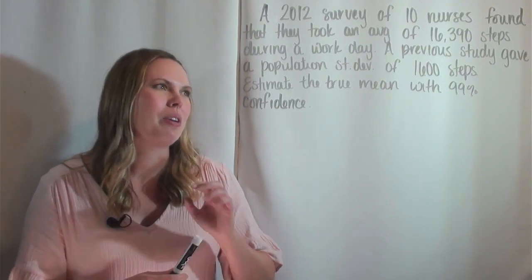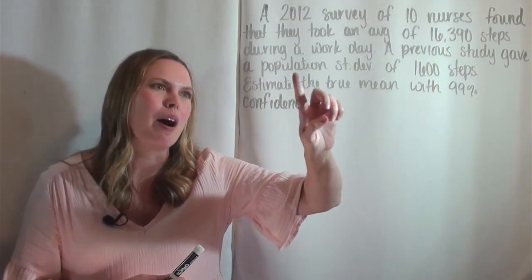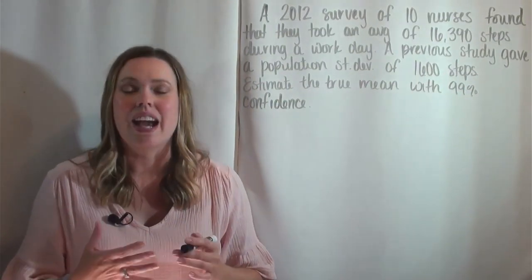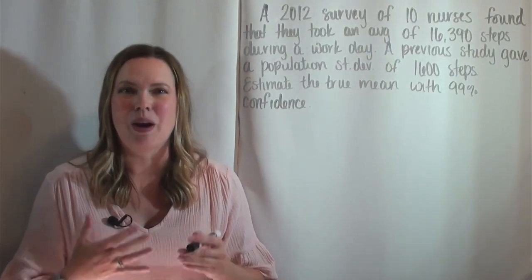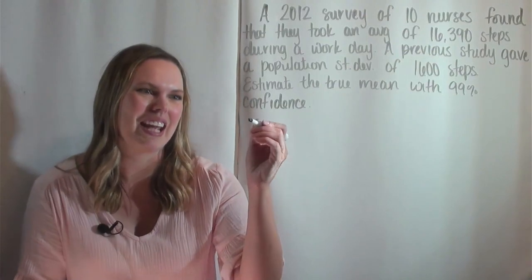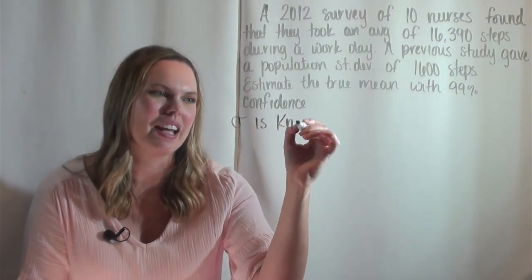And then we know with this sentence right here, it says a previous study gave a population standard deviation of 1600 steps. That tells us that sigma, the population standard deviation, is known. So in this case, sigma is known. And that is very important.